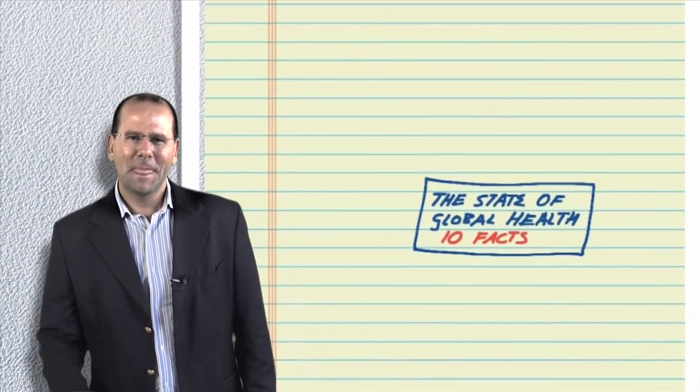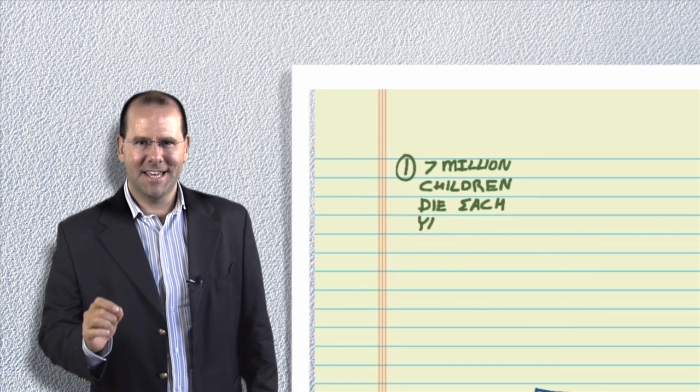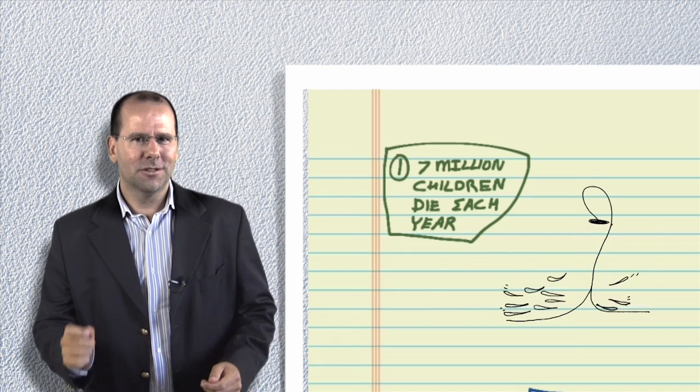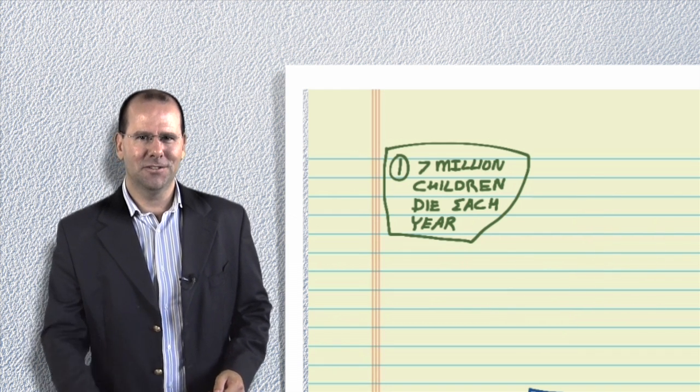Fact number one: around 7 million children under the age of five die each year. Almost all of these children could survive with access to simple and affordable interventions.